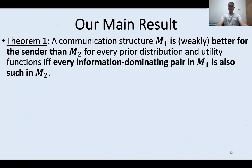Intuitively, the fewer information-dominating pairs a communication structure has in terms of set containment, the better for the sender, because the sender has more flexibility when implementing the signaling scheme. It turns out that when we formalize this intuition, we get a necessary and sufficient condition for one communication structure to be better for the sender than another in the robust sense.